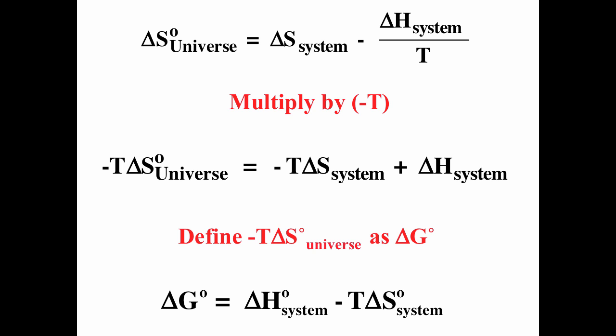We start with delta S universe equals delta S system minus delta H over T, and we multiply by minus T. That gives us minus T times delta S universe equals minus T times delta S system plus delta H. We can define minus T times delta S universe as delta G. That gives us one of my favorite equations: delta G equals delta H of the system minus T times delta S of the system. So delta G is minus T times delta S of the universe, and also equal to delta H minus T times delta S of the system. It's very important you keep track of those subscripts — delta S of the system and delta S of the universe are not the same.